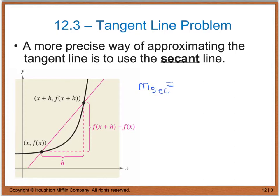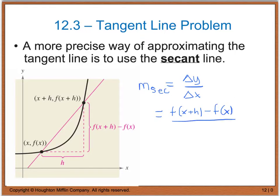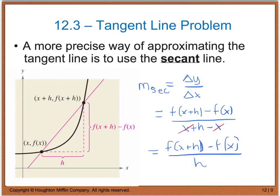We calculate the slope of the secant by taking the change in y divided by the change in x. The change in y equals f(x + h) minus f(x). The change in x comes from (x + h) minus x, and the x's cancel, leaving us with f(x + h) minus f(x), all divided by h. This is really our difference quotient.